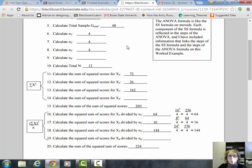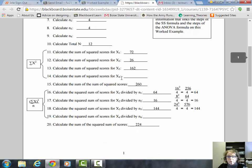When working ANOVA problems, you can write T over each X value to remember the relationship between sum of X and capital T—it's the same number, just different notation. Do the same thing for treatment groups 2 and 3. The sum of X squared is just summing up 72, 26, and 162, which gives you 260.